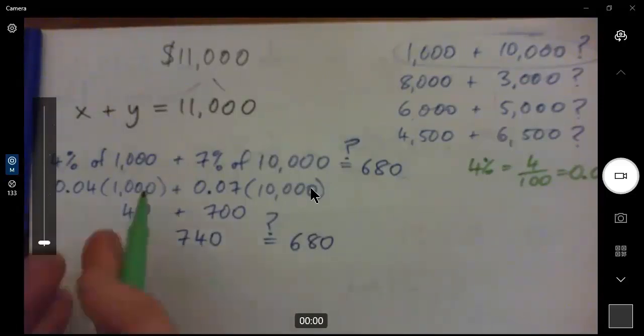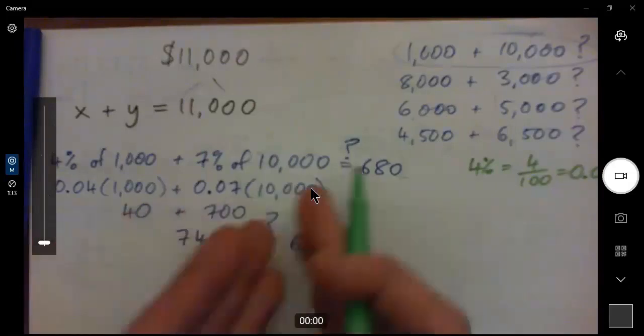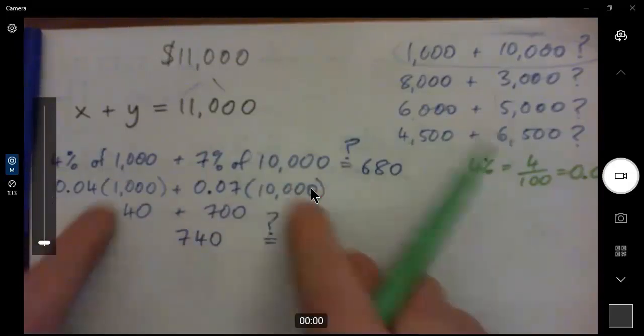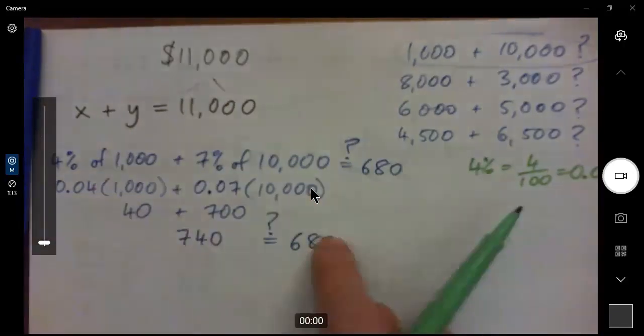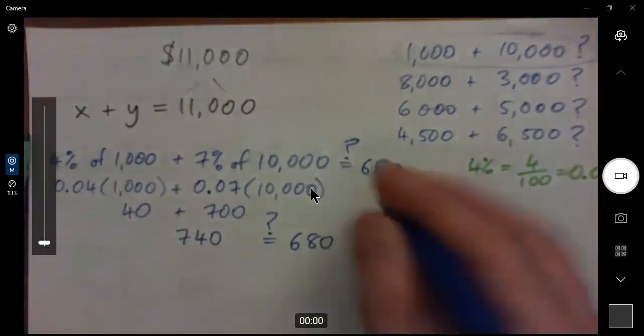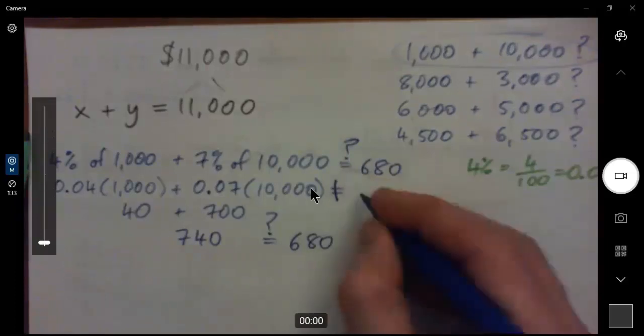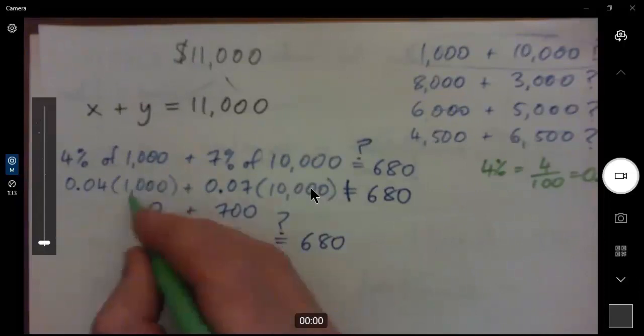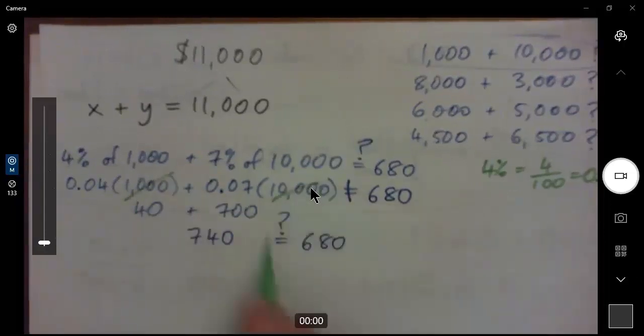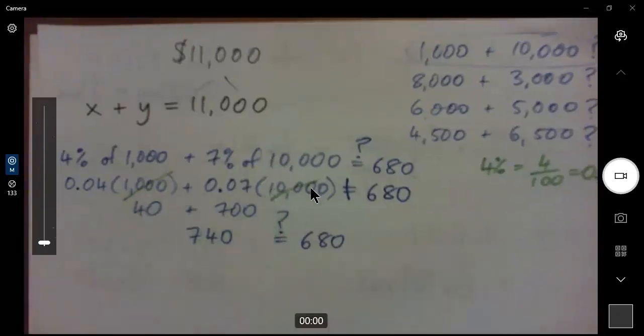No, so these are wrong, but at least I think we're starting to understand what's going on here, right? We're earning interest in one account, we're earning interest in another account. The amounts from both accounts add to $11,000. So in other words, this does not equal 680. So what's wrong in this equation is that this number's wrong and this number's wrong.